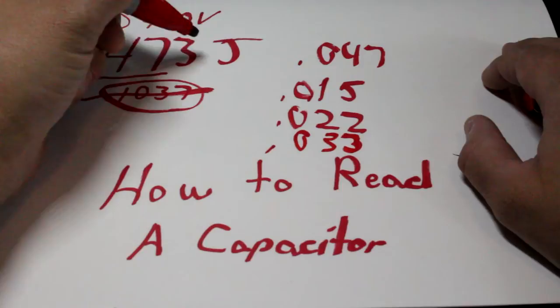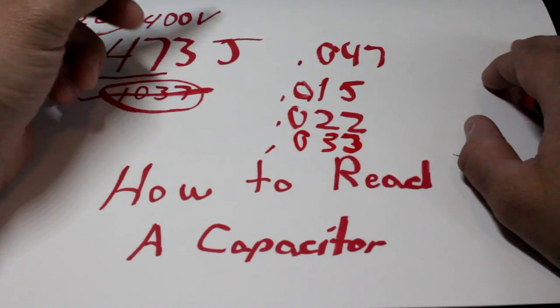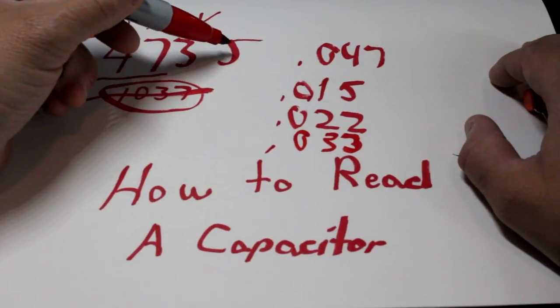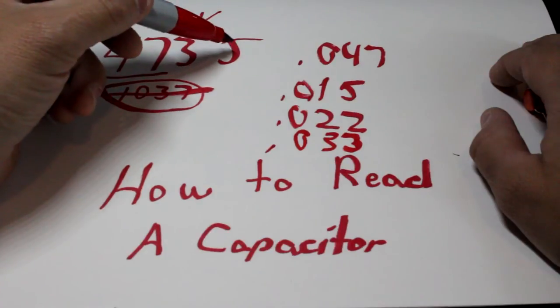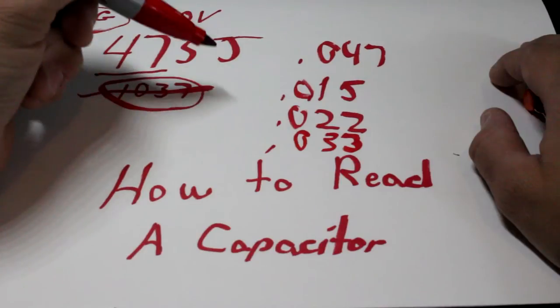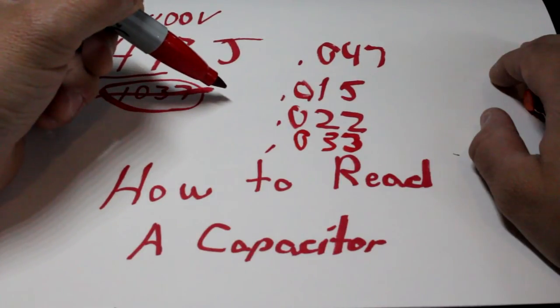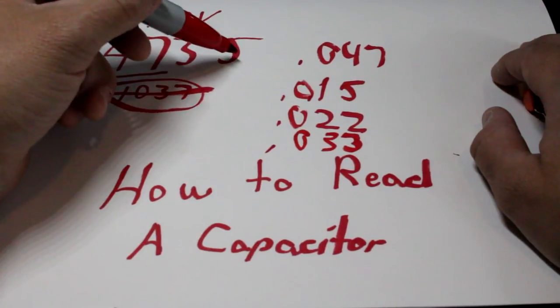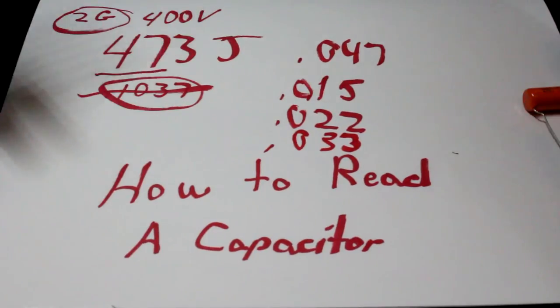Now, this J is the tolerance. That's a very important number. Not all capacitors are made the same as far as quality goes. It goes from B to Z. J is 5%, K is 10% tolerance. So, you need to make sure that it's at least J or lower, or at least I do.